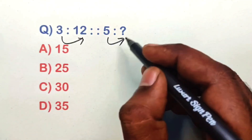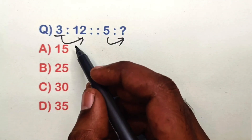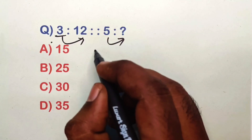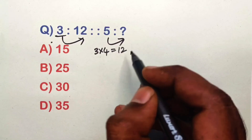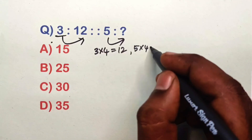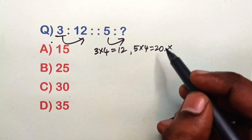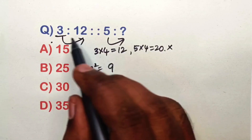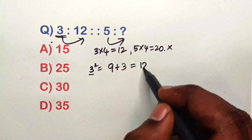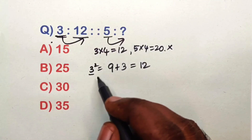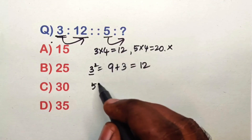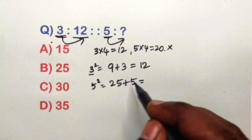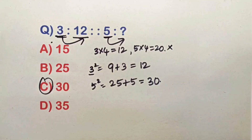Find the relation in this analogy question. Take 3: 3 into 4 is 12, and 5 into 4 is 20 — not present in the options, so this method is wrong. Take 3: 3 squared is 9 — add the same digit to the result: 9 plus 3 is 12. Take 5: 5 squared is 25 — add the same digit: 25 plus 5 is 30. Option C is the correct answer.